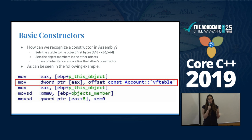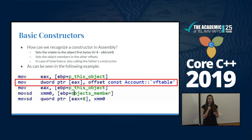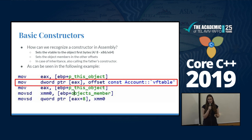IDA Pro can show you that something is a Vtable. In this case, I compiled the code with symbols, so you can see it says 'const account Vtable' because the object is called 'account'. But usually you just see a Vtable with no name, so you cannot know which Vtable is relevant for which object. A Vtable is actually a lot of pointers right after one another. IDA can recognize a Vtable because in the code itself there are also calls for the pointers inside this Vtable.